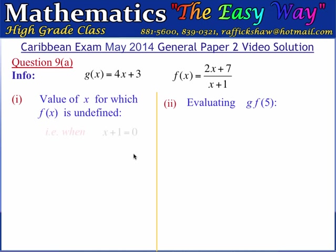f of x is undefined when x plus 1, the expression in the denominator of f of x, becomes equal to 0. That gives us x equals minus 1. So f of x is undefined when x is equal to minus 1.